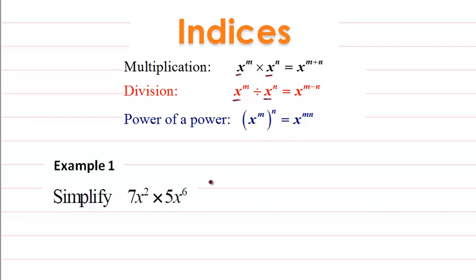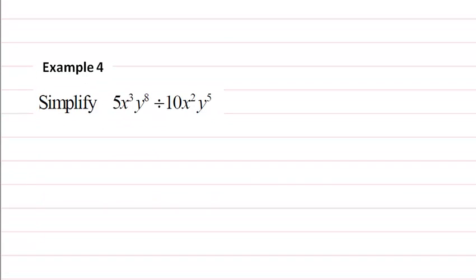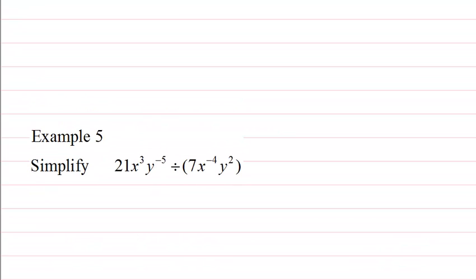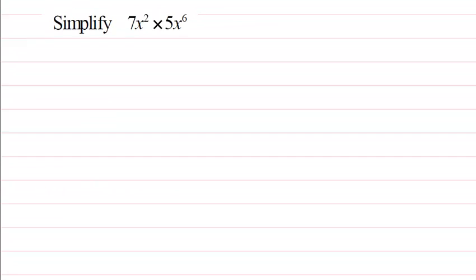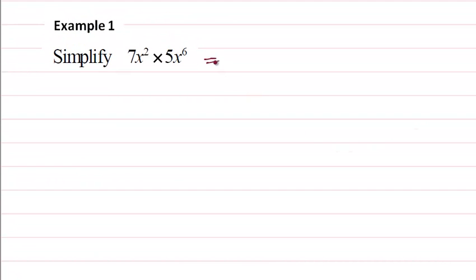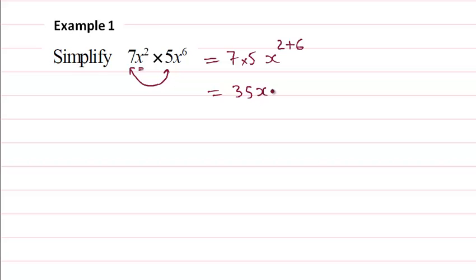We do some examples — examples one through five. Example one: first we multiply number with number, so seven times five. Then we have x squared and x to the power six. We add these powers, so we get 35x to the power eight.